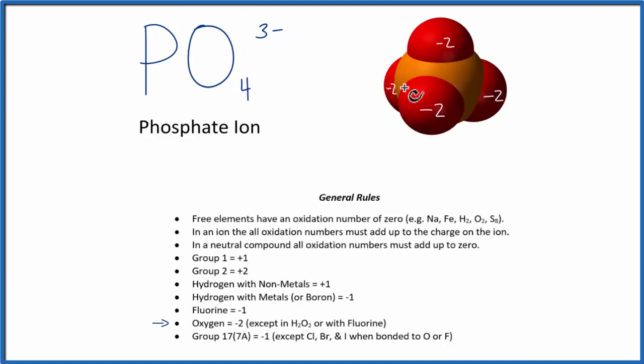Think of it this way. We have two, four, six, eight. So we have a negative eight plus some number that's going to give us this three minus here. Negative eight plus five. That would give us minus three. And that's going to be the oxidation number on this phosphorus right here.